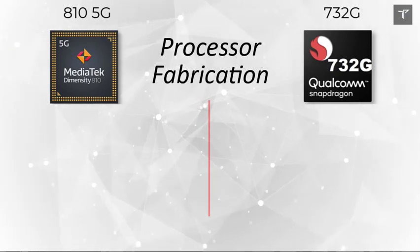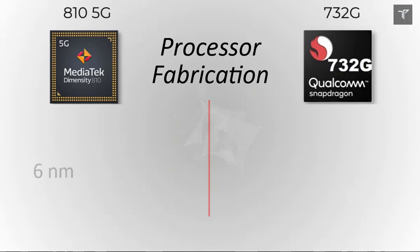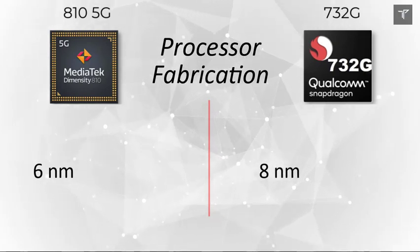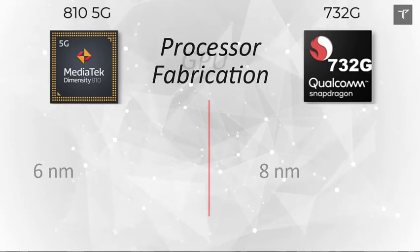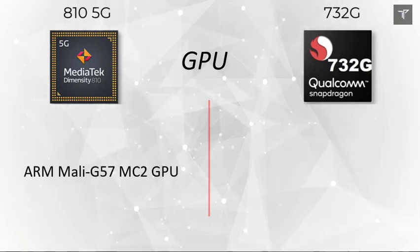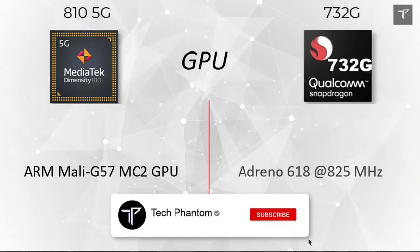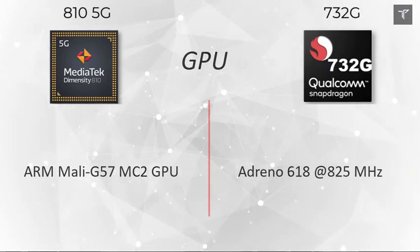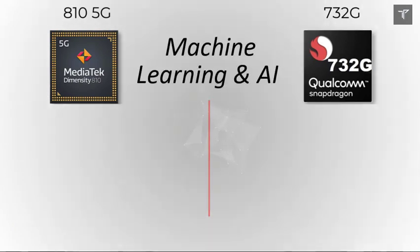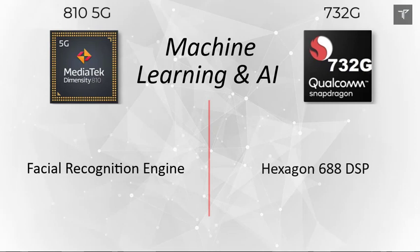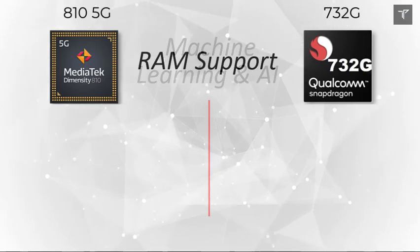On fabrication and design, the MediaTek Dimensity 810 is much more power efficient than the Snapdragon 732G, coming with a 6nm process over the 8nm. For gaming, the Dimensity 810 comes with the ARM Mali-G57 MC2 GPU, whereas the Snapdragon comes with the Adreno 618 at 825 MHz. On the machine learning and AI side, the MediaTek comes with a facial recognition engine whereas the Snapdragon has the Hexagon 688.